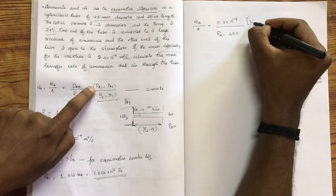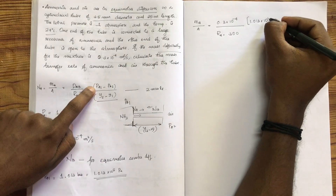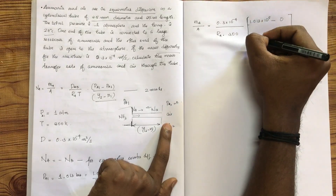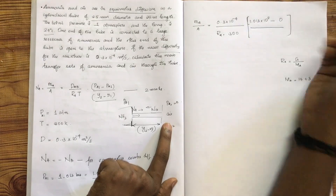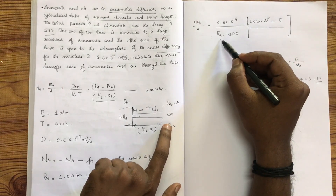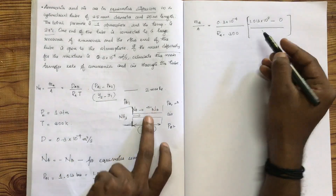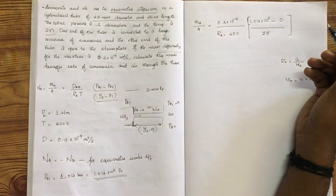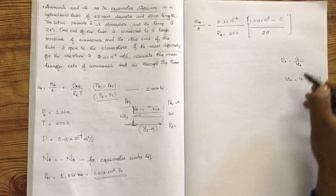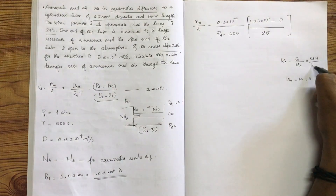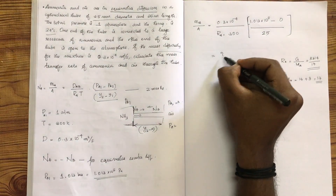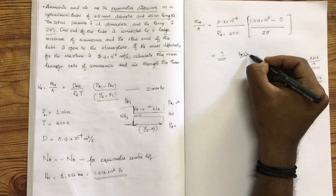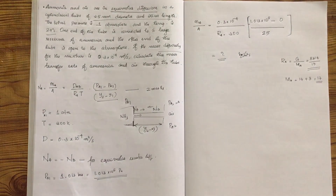PA1 is 1.013 into 10 raise to 5 minus the atmosphere pressure. PA2 is 0. The length is 25 millimeter. Temperature is 300 Kelvin. Substituting here, R is equal to 8314 divided by 17. We will get the answer in per meter square per second.